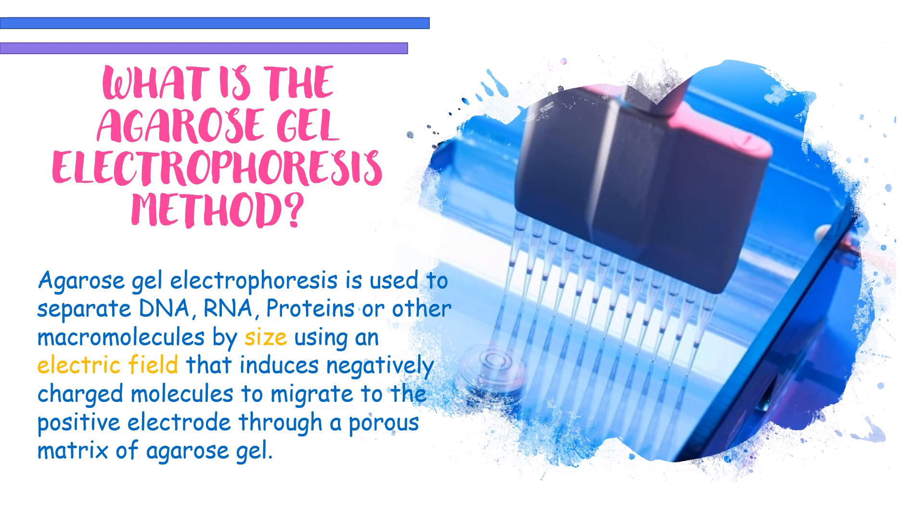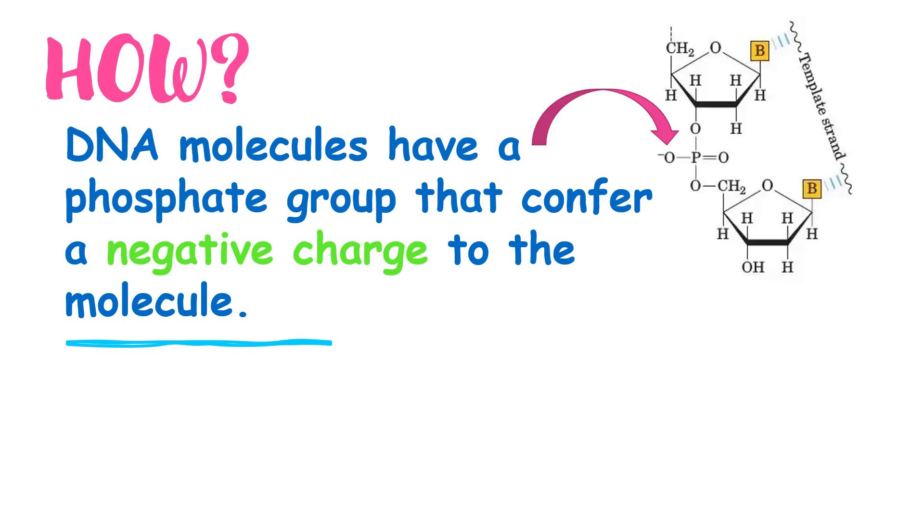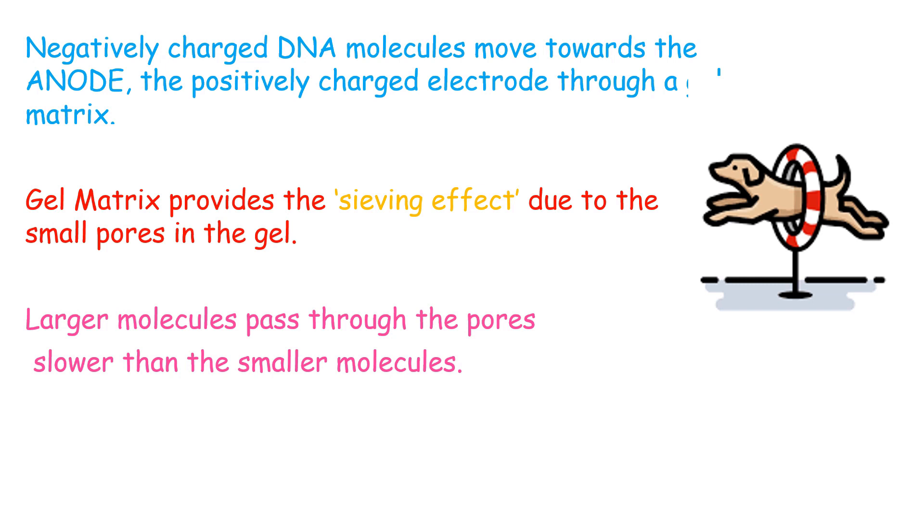How does the agarose gel electrophoresis method work? DNA molecules have a phosphate group that confers a negative charge to the molecule. An electric field is applied and negatively charged DNA molecules move towards the anode, the positively charged electrode, through a gel matrix. The gel matrix provides the sieving effect due to the small pores in the gel. Larger molecules pass through the pores slower than the smaller molecules, therefore molecules dissociate according to size.